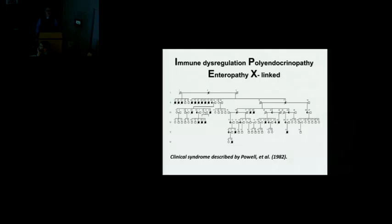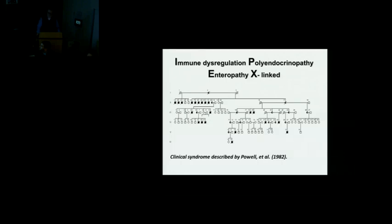The tricky thing about this original family was that most of the children got sick in the first year of life and many died by two to three years of age from overwhelming autoimmune disease. However, a couple of affected boys in the family lived longer — one actually lived into his early 30s, the oldest patient we know of with this disease. This was due to the specific mutation they carried. The inheritance pattern is consistent with X-linked recessive, where mothers carry the disease and affected boys die.